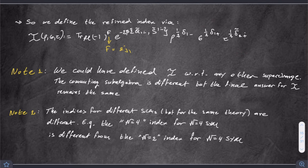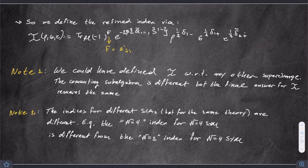We could have defined the index with any other supercharge — the final result over the space of local operators of a particular theory is the same. Also, the indices for different superconformal algebras but for the same theory are different. For example, an N=4 theory has a rank-4 commutant instead of rank-3, so the N=4 index for N=4 super Yang-Mills looks different than the N=2 index for N=4 super Yang-Mills.